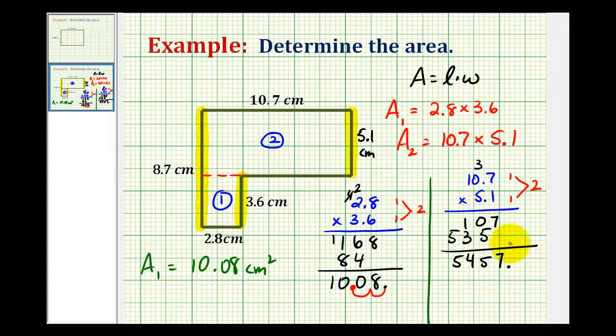So if we move the decimal place to the left two places, we have 54.57 for area 2.